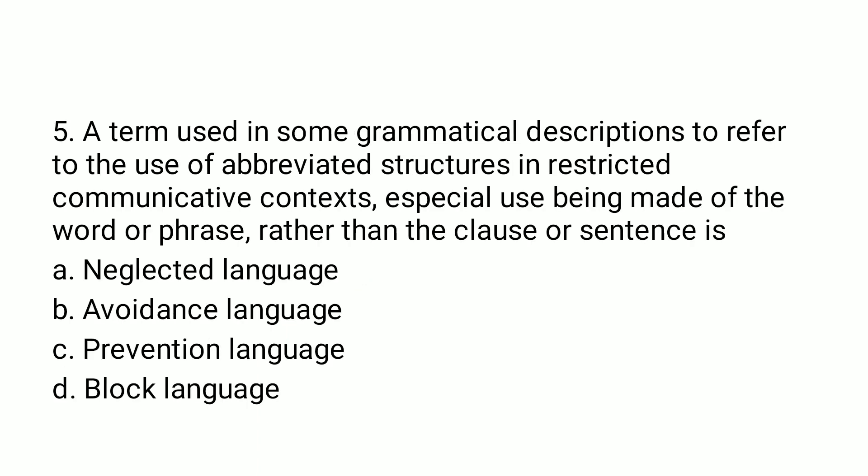The fifth question talks about a term used in some grammatical descriptions to refer to the use of abbreviated structures in restricted communicative contexts, where special use is made of a word or phrase rather than a full clause or sentence. This kind of language is known as block language. Examples include phrases like 'no smoking', 'exit', and 'one way'. Hence option D is the correct answer.